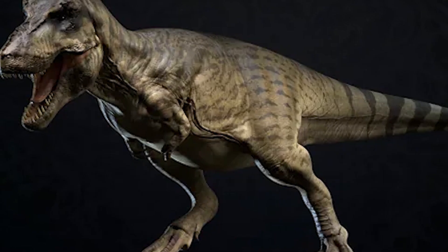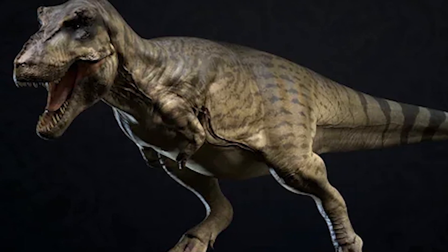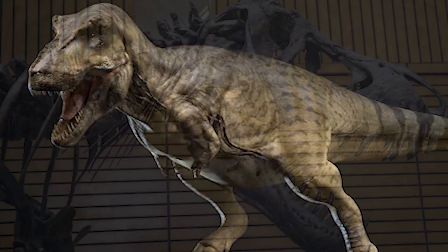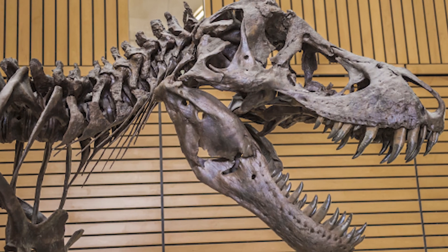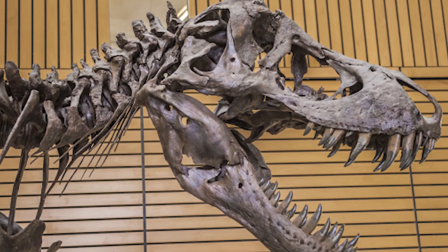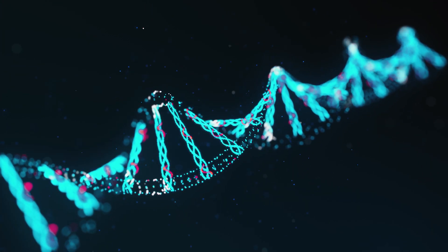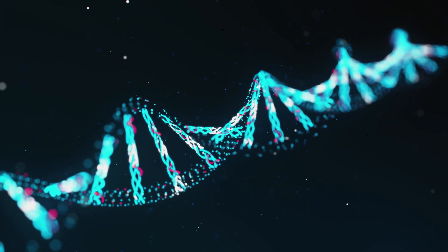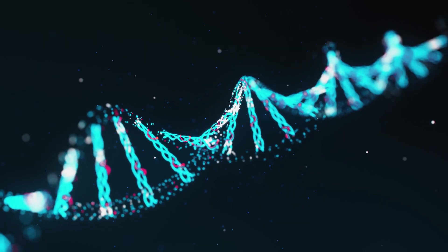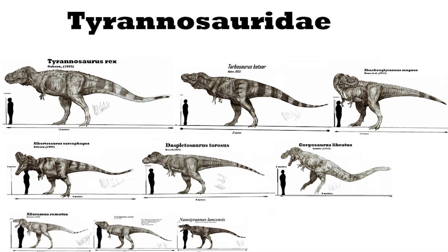Probably the best way to start analyzing T-Rex's small arms is to look at them in terms of natural selection along with his family tree. Natural selection is a complex process — it boils down to traits that are successful being passed down to future generations, while traits that aren't are eventually eliminated. Let's take a look at the ancestors of the Tyrannosauridae, the family from which Tyrannosaurus came from.